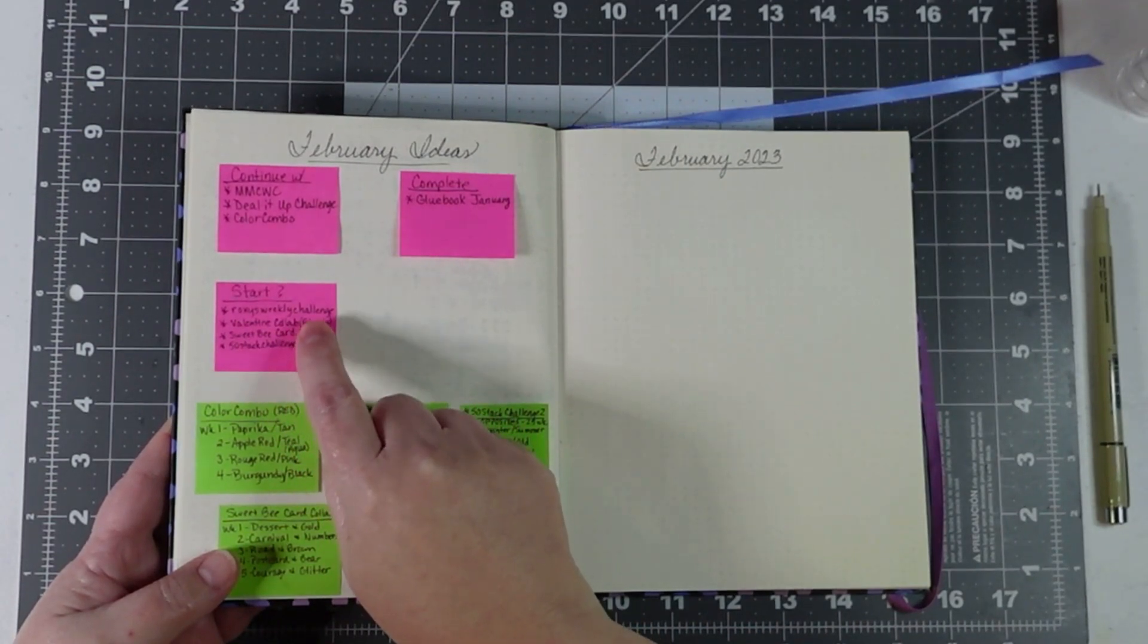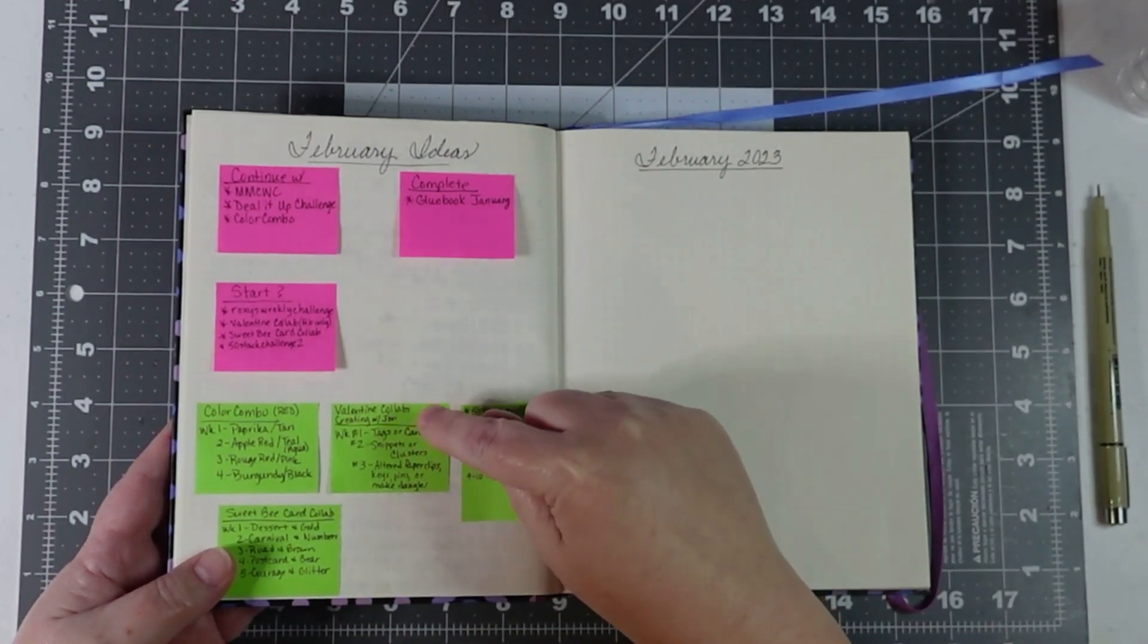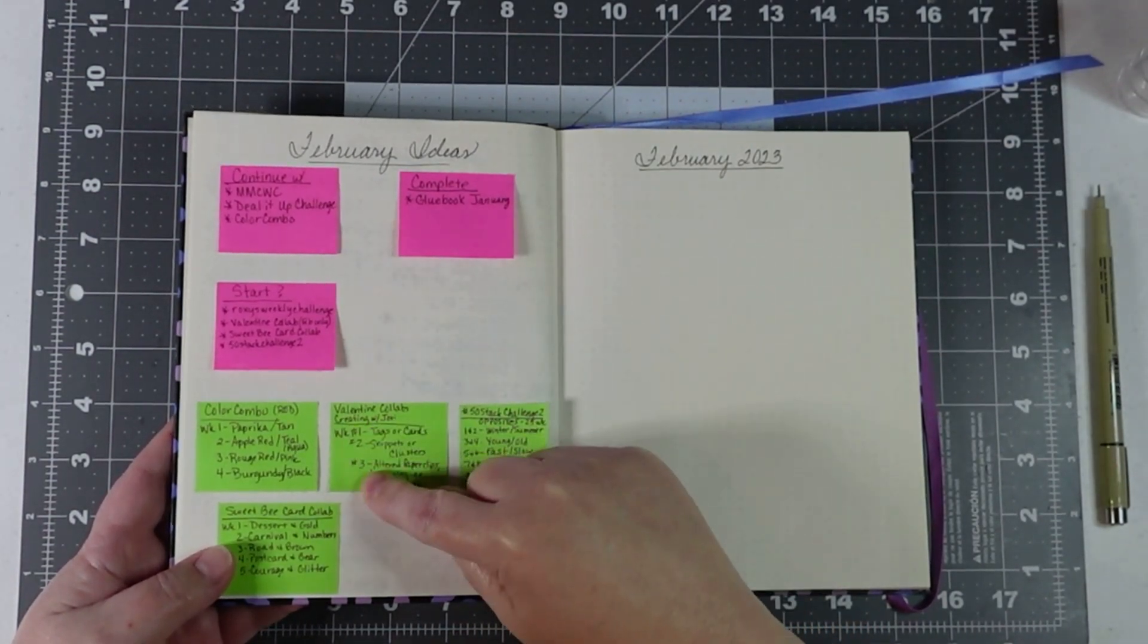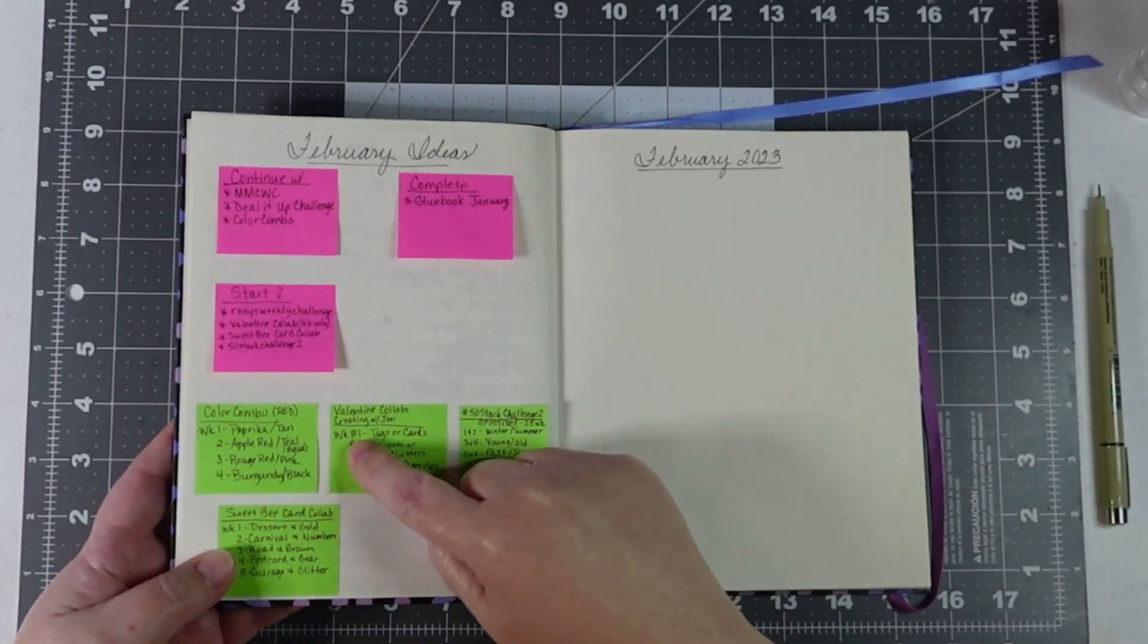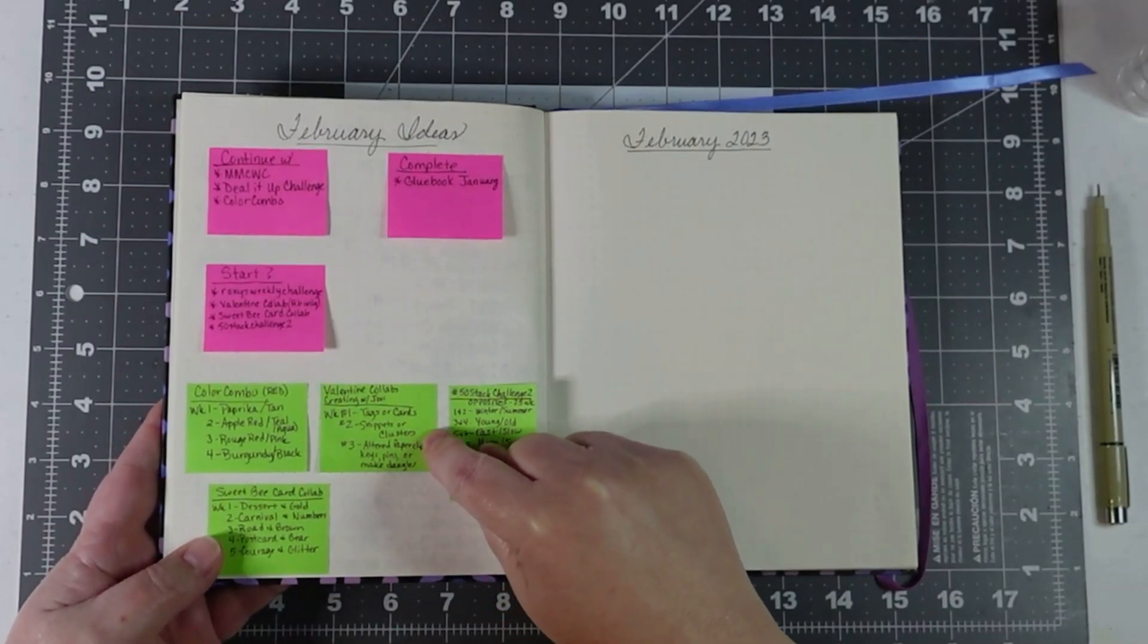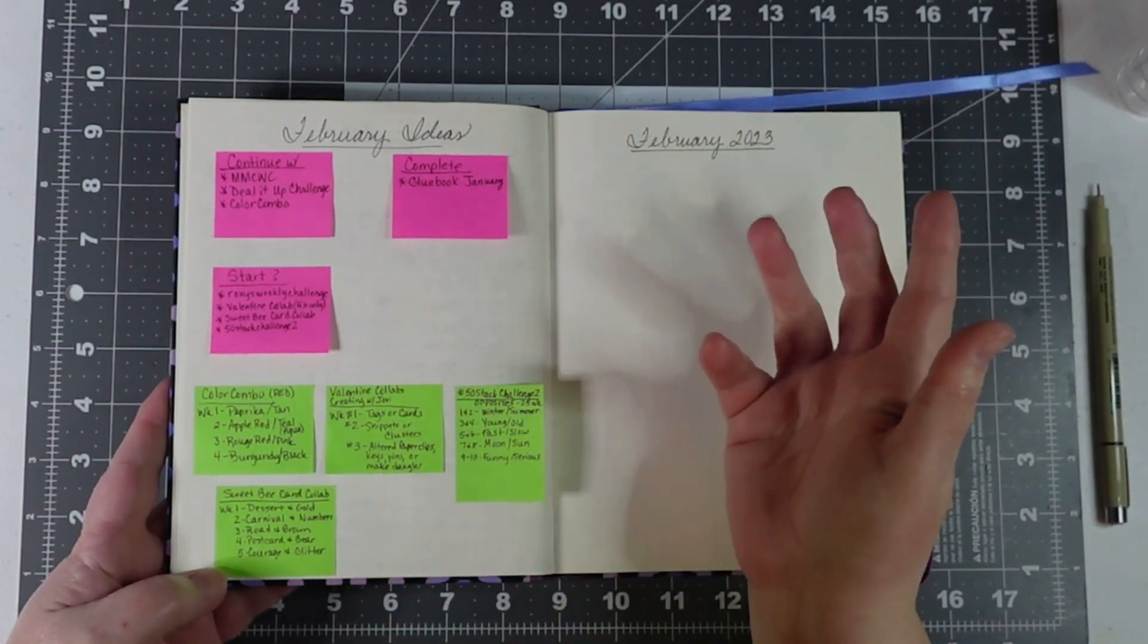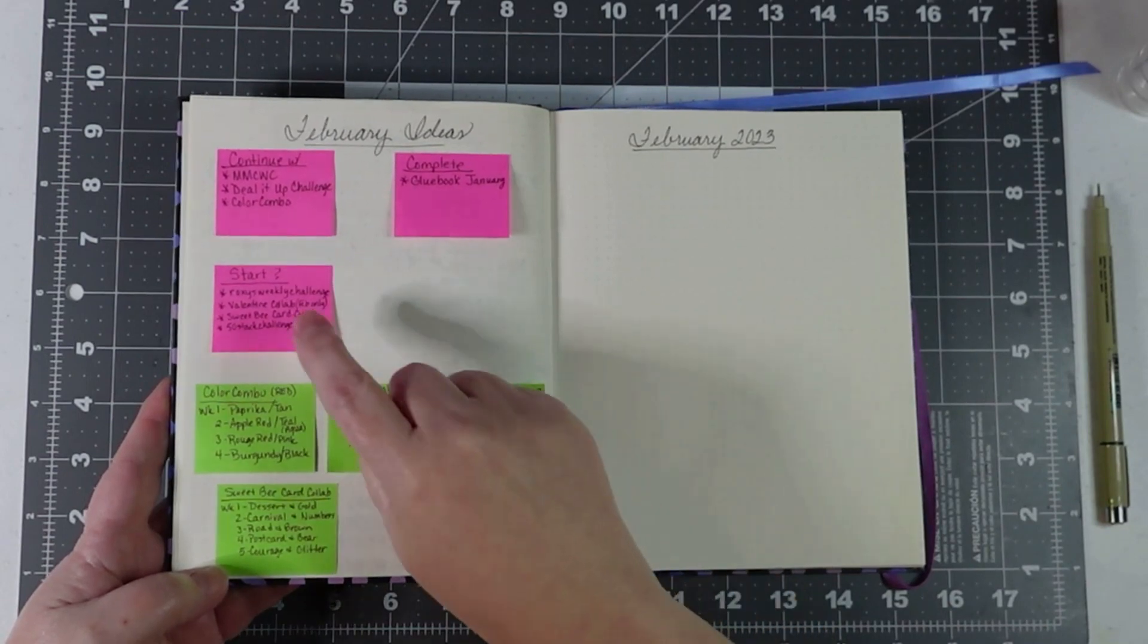Then there's a Valentine Collab. It's only three weeks in February, and that's with Creating with Jovi and others. I found it on the Creating with Jovi YouTube channel. Three weeks. Week one is to make everything's Valentine related. Week one you're making tags or cards, week two you're making snippets or clusters, and week three is altered paper clips, keys, pins, or make a dangle, or make dangles plural.